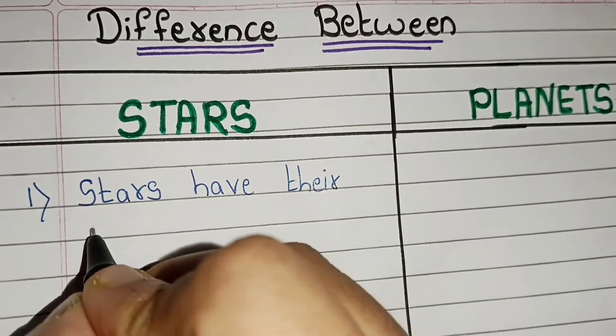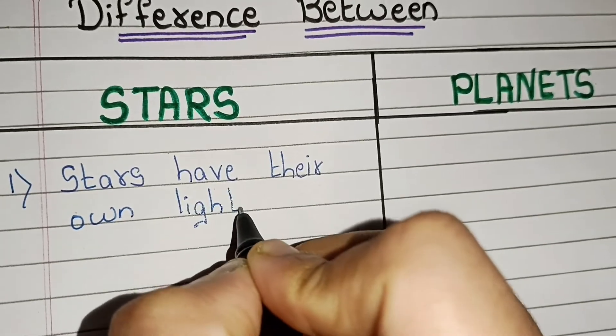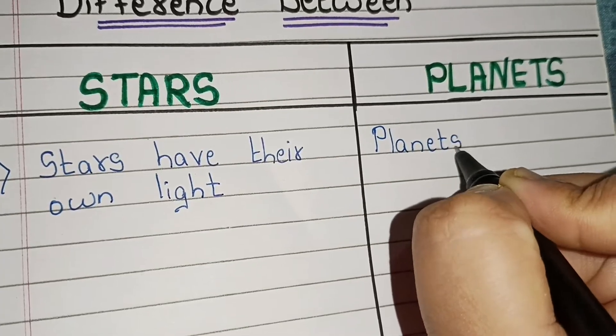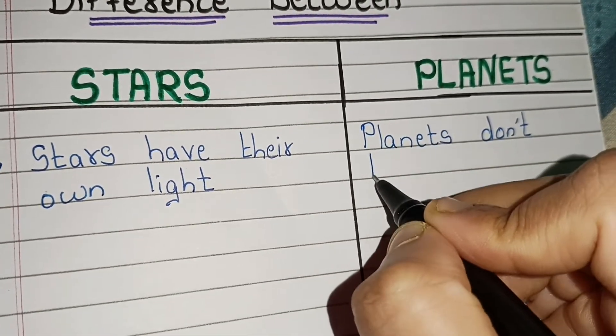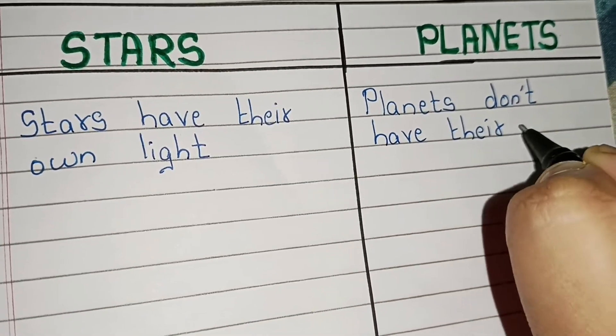Let's start point number one. Stars have their own light but planets don't have their own light.